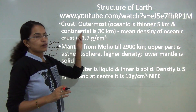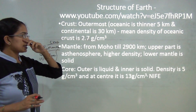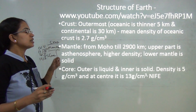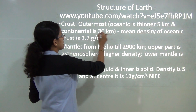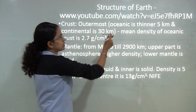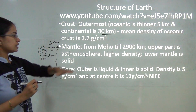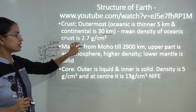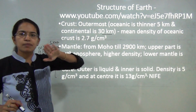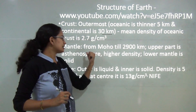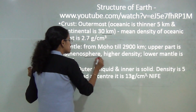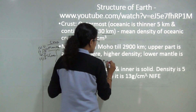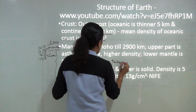The crust is the outermost layer. The thickness of the oceanic crust is less than that of the continental crust — continental crust goes up to 30 kilometers while oceanic crust is only about 5 kilometers. An important part of the mantle is the upper portion, known as the asthenosphere, which will be discussed further in the next chapter on plate tectonics.